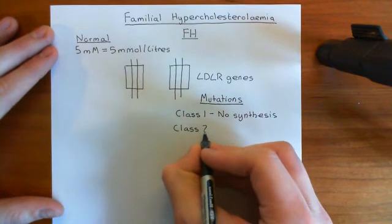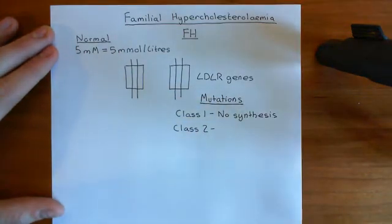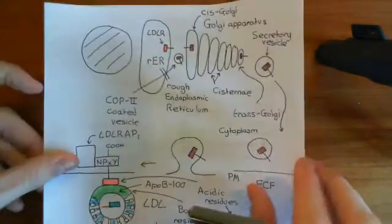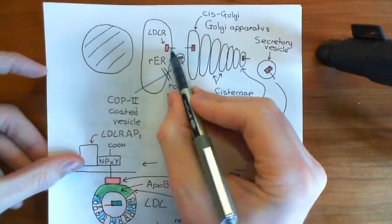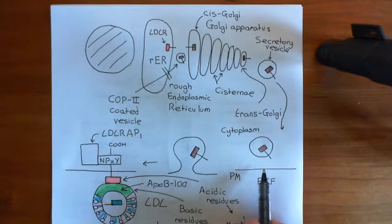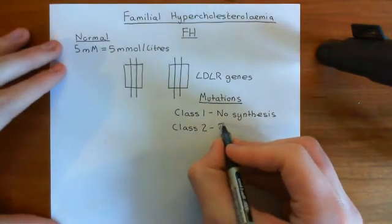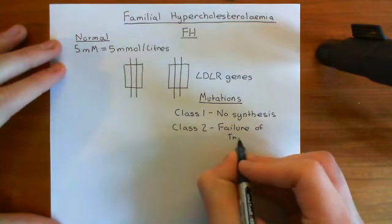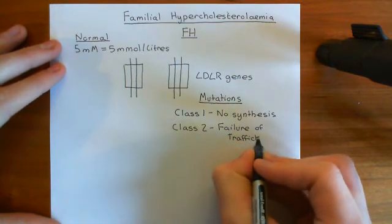In class 2 mutations, you do synthesize LDL receptor from that gene, but it doesn't traffic properly to the membrane. There is some flaw in this trafficking process — you produce it, it gets into the rough endoplasmic reticulum, but then it doesn't end up in the plasma membrane as it should. So failure of trafficking is what occurs in class 2 mutations of the LDL receptor.